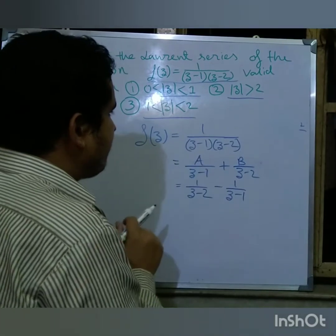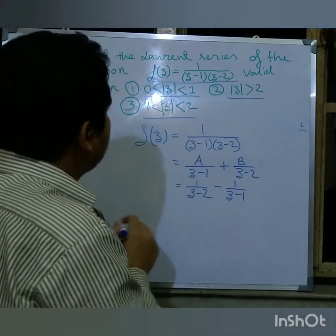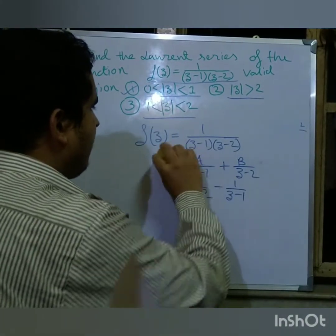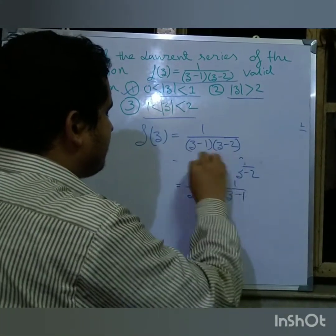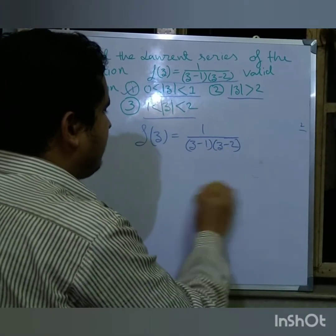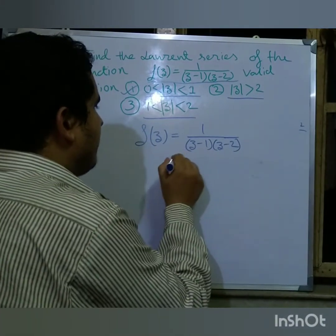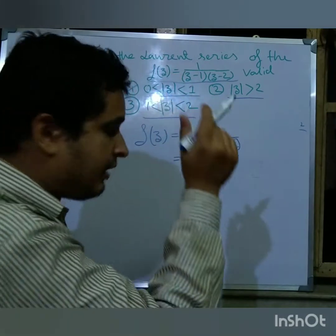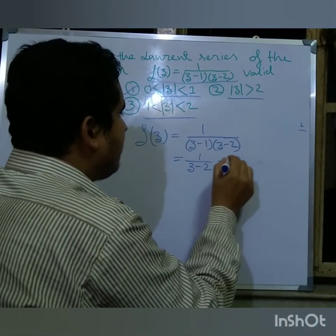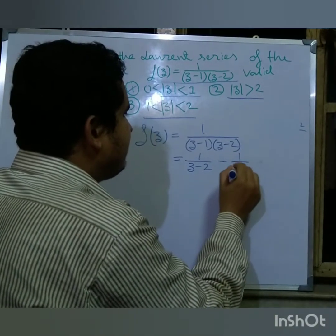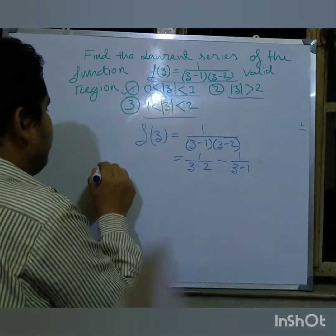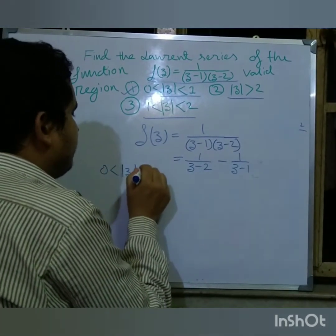Now with the partial fraction result, I write: f(z) equals 1 over (z minus 1) minus 1 over (z minus 2). This is my total formula. The first valid region is |z| less than 1.